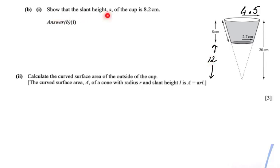It says, show that the slant height S of the cup is 8.2 cm. So they're giving me the answer. This is 8.2 and I have to show that that is correct. Now, there are several ways of doing that. I'm just going to do the way that I think is easiest, because I'm going to have a look again at the entire cone. Because I can make some sort of right angle triangle there. You see that?